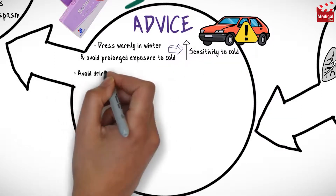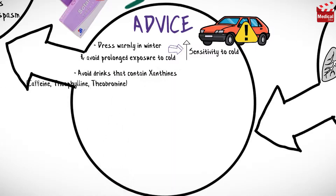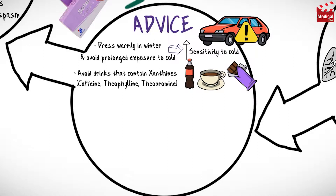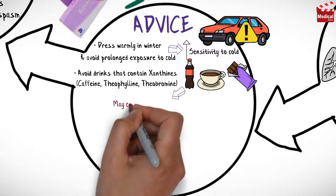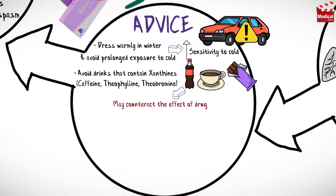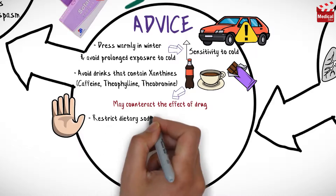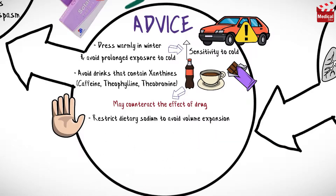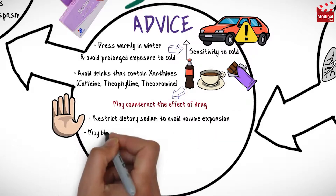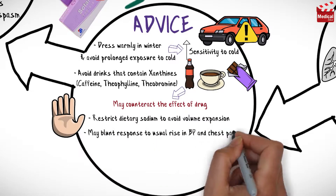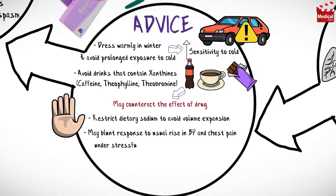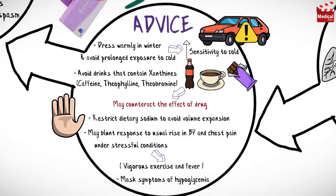Avoid drinks that contain xanthines — caffeine, theophylline and theobromine — including colas, tea and chocolate, because they may counteract the effect of this medication. Restrict dietary sodium to avoid volume expansion. Sodalol may blunt the response to the usual rise in blood pressure and chest pain under stressful conditions such as vigorous exercise and fever, and it may also mask the signs and symptoms of hypoglycemia.